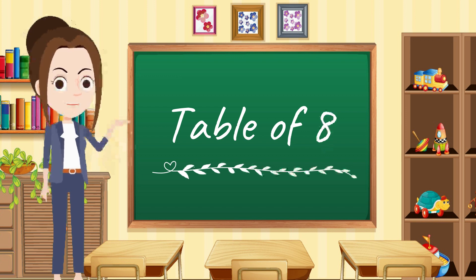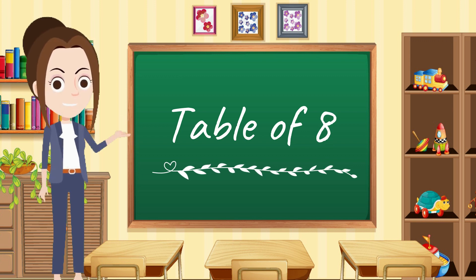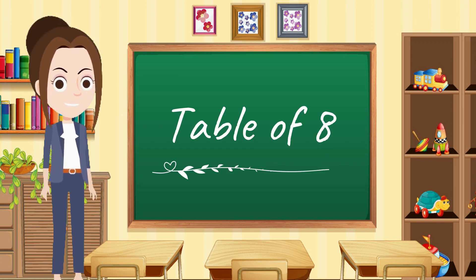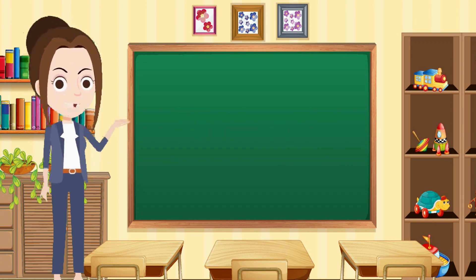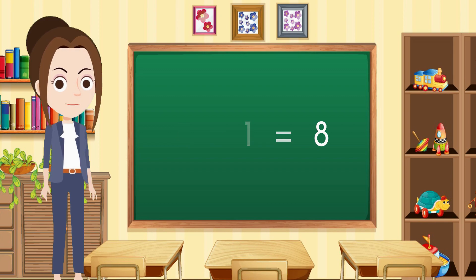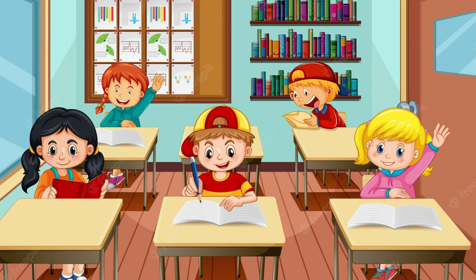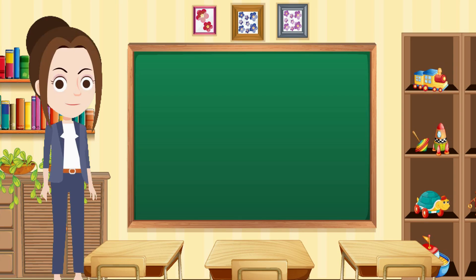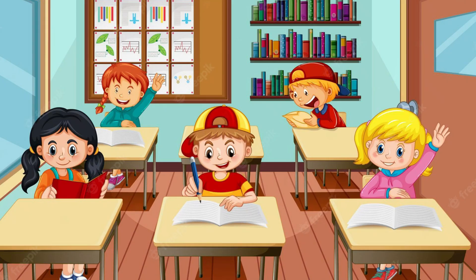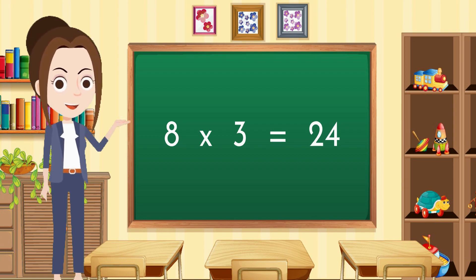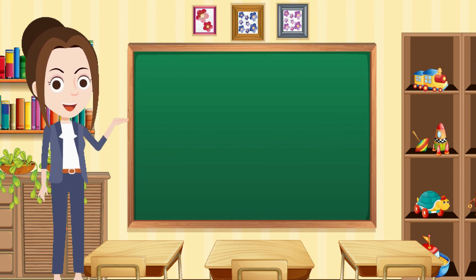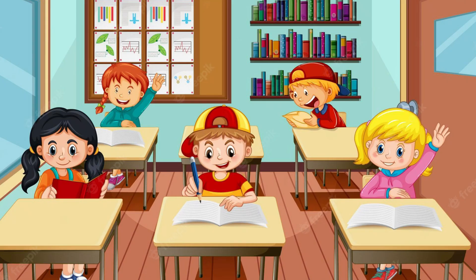Hello kids, let's start to learn the table of eight. Eight ones are eight. Eight twos are sixteen.